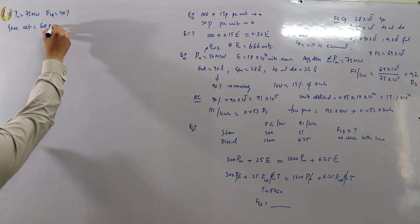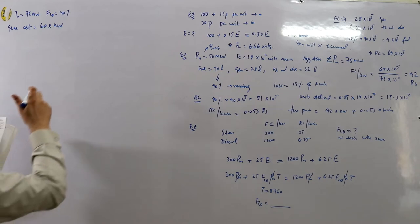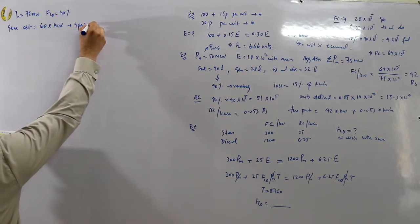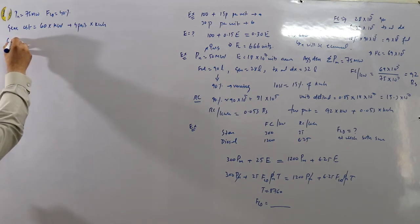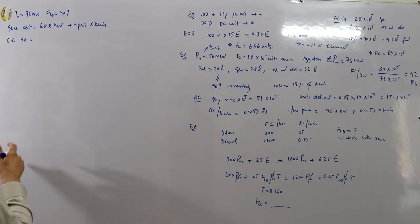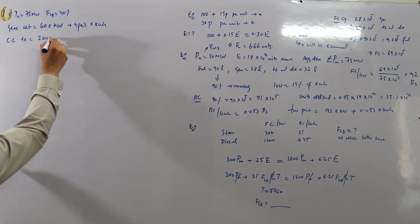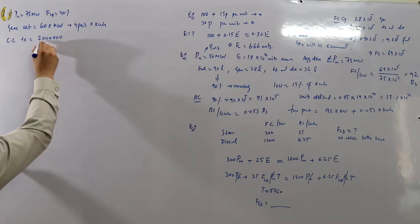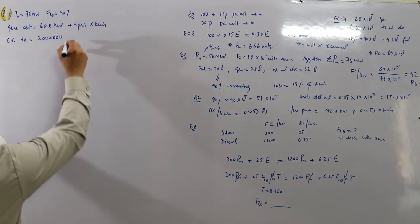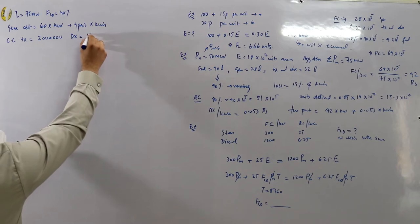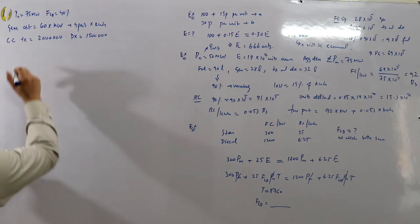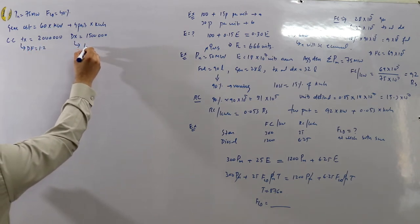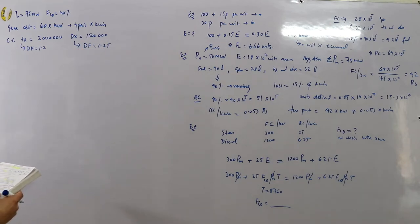Plus 4 paisa per kilowatt hour transmitted. Annual capital charges of the transmission system are 20 lakh rupees (2 × 10⁶), and for the distribution system 1.5 × 10⁵ rupees. Diversity factors: transmission — 1.2; distribution — 1.25.